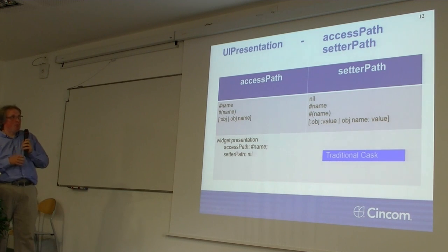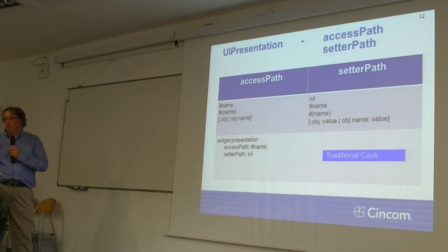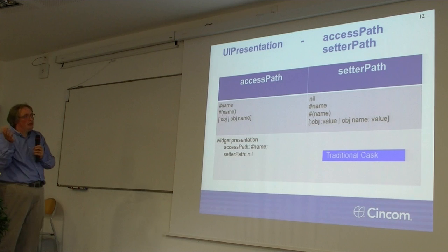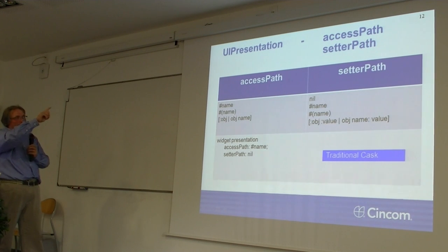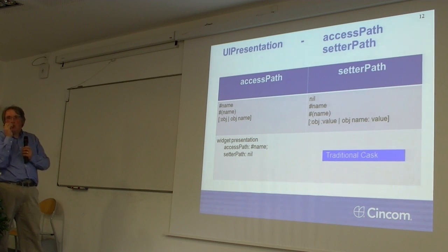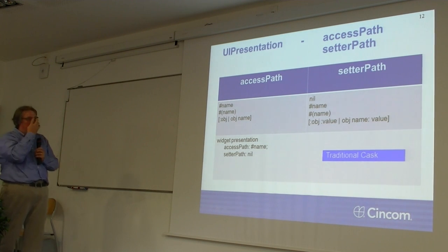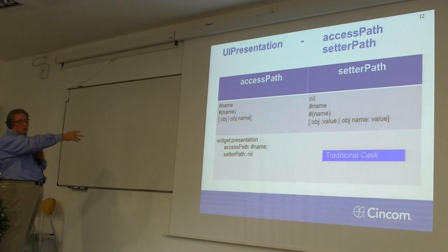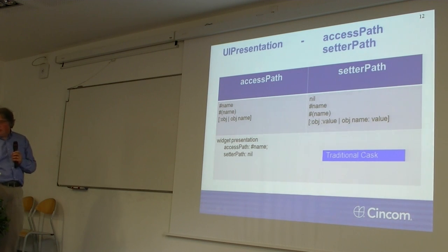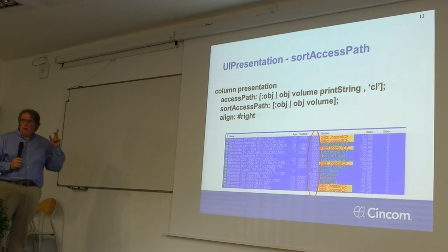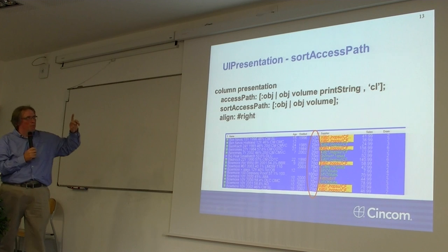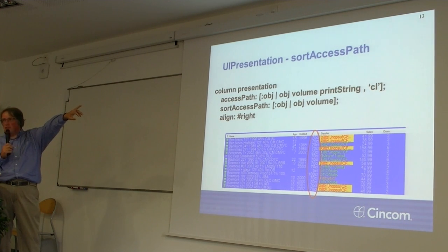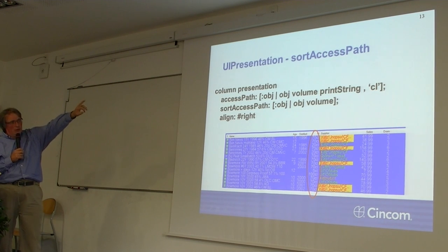The setup path is related to the access path. It can be nil — in that case we don't set the object again. If the access path is a symbol or array of symbols, we use that access path and add a colon to the last method to set the value. You can also use a block with object and value arguments. An example: widget presentation accessPath: #name; setupPath: nil. We also use the presentation for columns in list view. For sorting, we have a sort access path — for centiliters shown as a string, we display using printString but sort using the integer volume value. If you don't assign a sort access path, the display value is used for sorting.